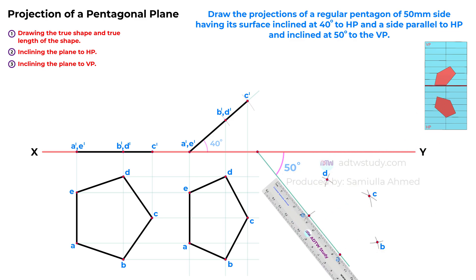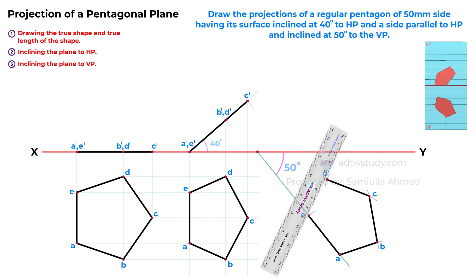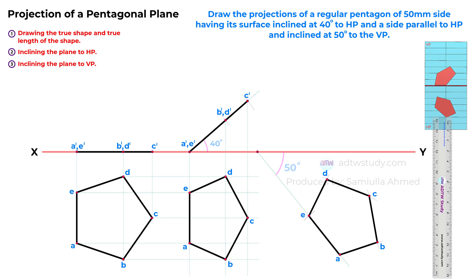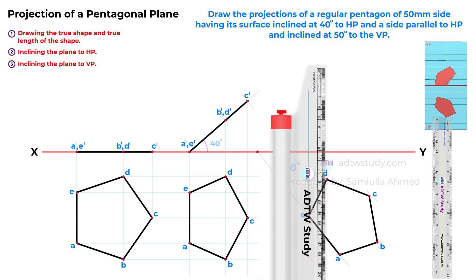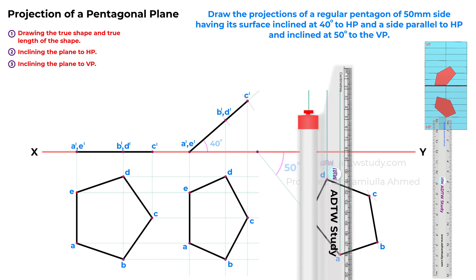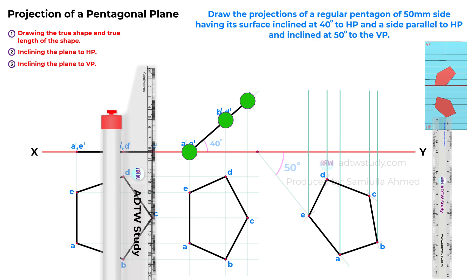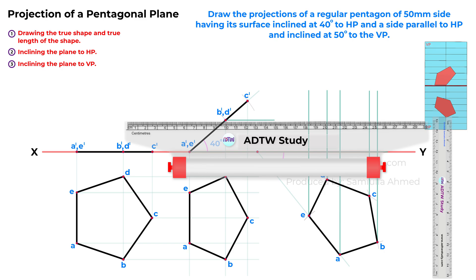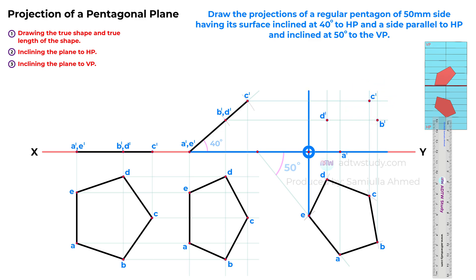Join these points to obtain the top view of the pentagon inclined at both the HP and VP. In the final step, we'll draw the front view of this inclined plane. To achieve this, project vertical lines upwards from all the previously determined points as illustrated. Next, project horizontal lines from these points in the front view. These lines will determine point B dash, while others will identify points D dash, C dash, and E dash. Connect all these points to obtain the front view of the pentagon inclined to both the HP and VP.